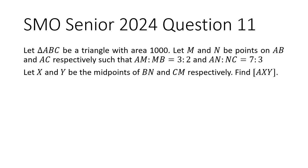In the question, we are given triangle ABC. This is a triangle with area 1000. We are told that M and N are points on AB and AC respectively, such that the ratio of AM to MB is 3 to 2, and AN to NC is 7 to 3.